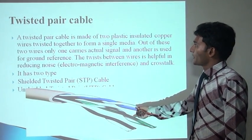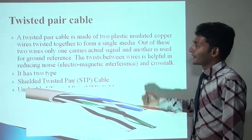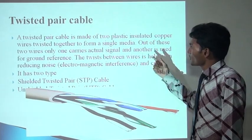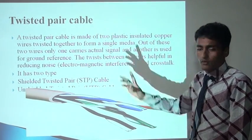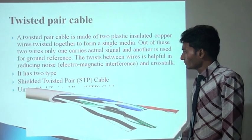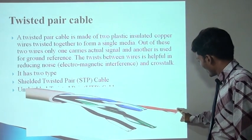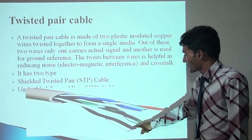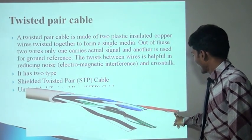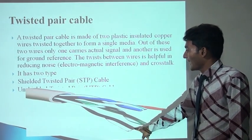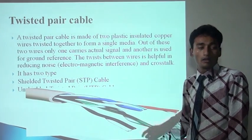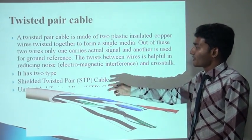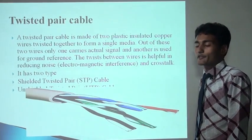Twisted pair cable is made of two plastic-insulated copper wires which are twisted with each other. One is used to carry the actual signal and another is used for ground reference. In this figure, two cables are twisted with each other. There are eight cables used in a twisted pair — one orange, green, blue, and black. One cable is used for ground. There are two types: shielded twisted pair and unshielded twisted pair.